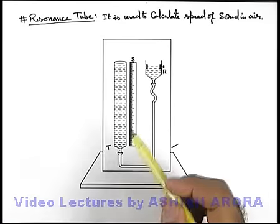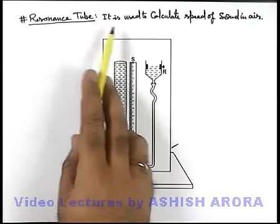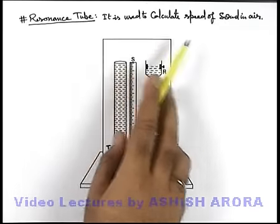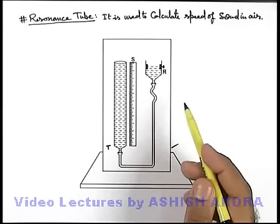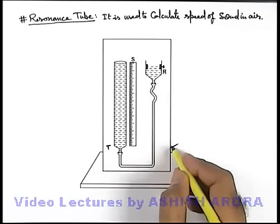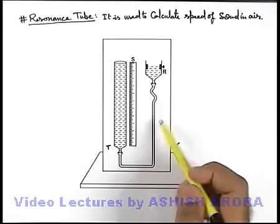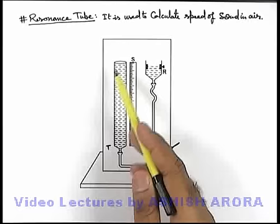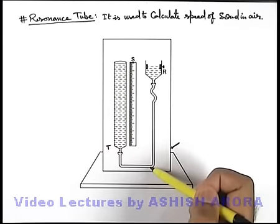Let's discuss the experiment of resonance tube, and it is used to calculate speed of sound in air. Here you can see a typical experimental set-up of resonance tube experiment.